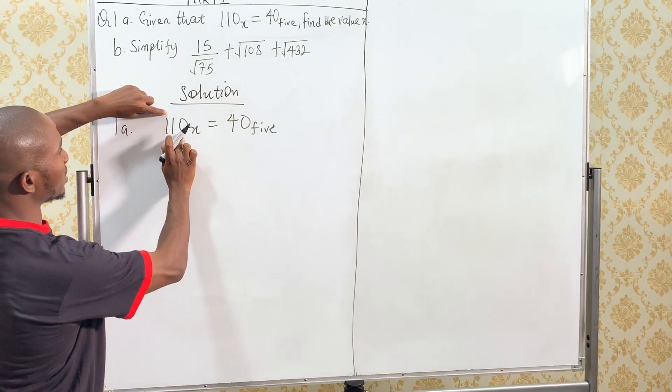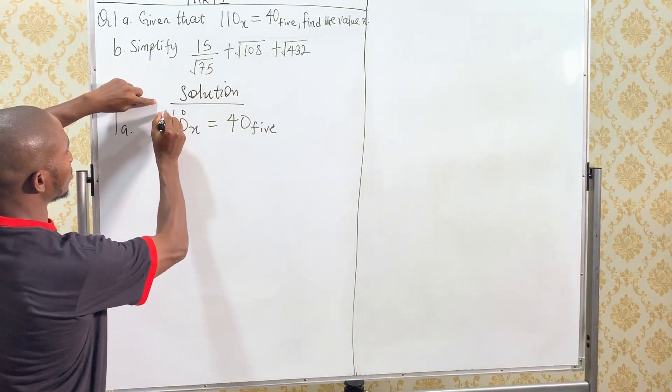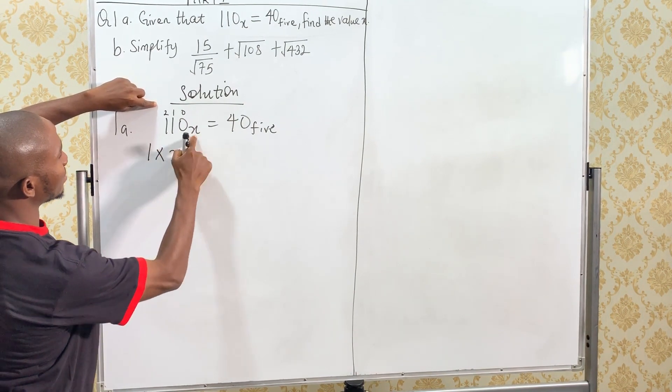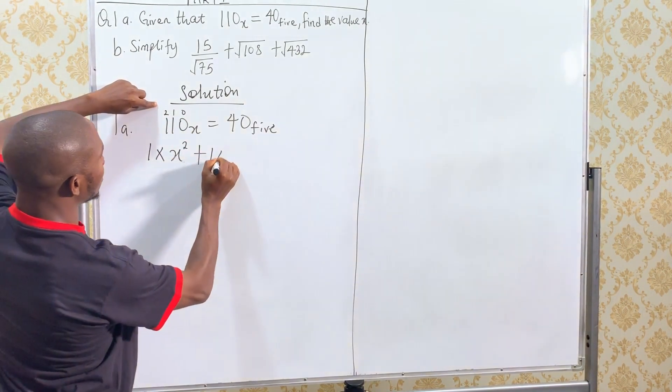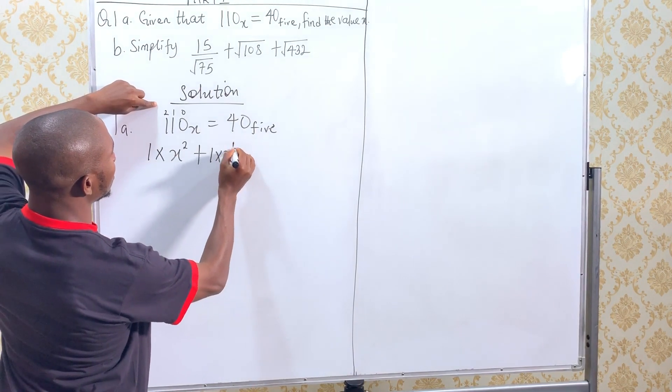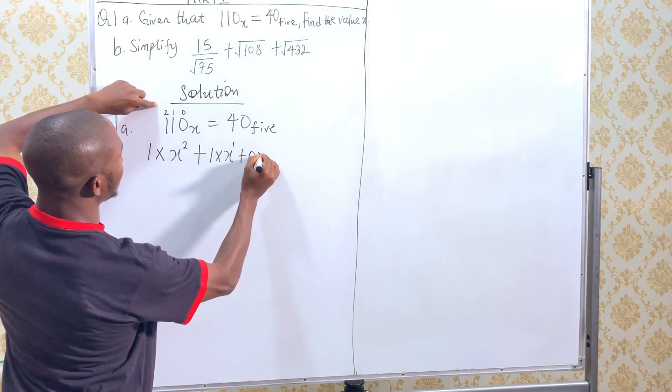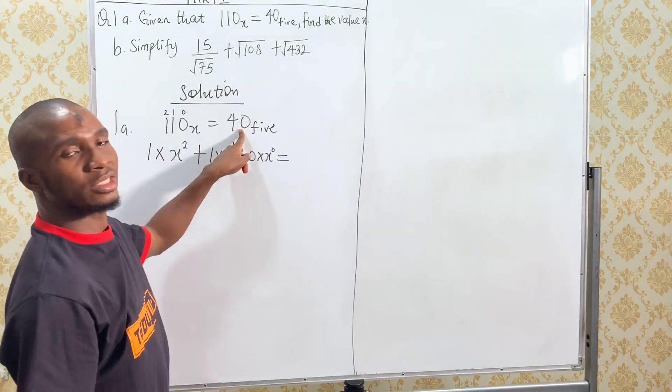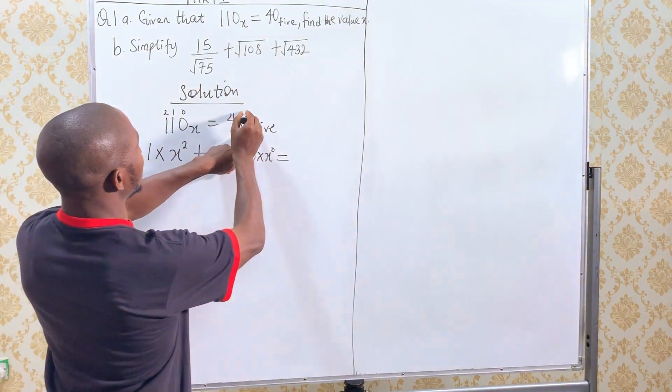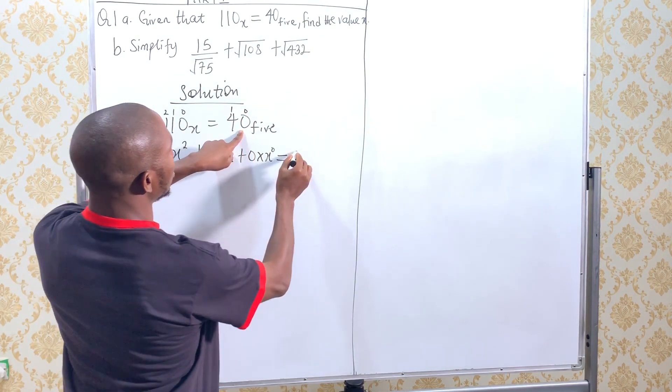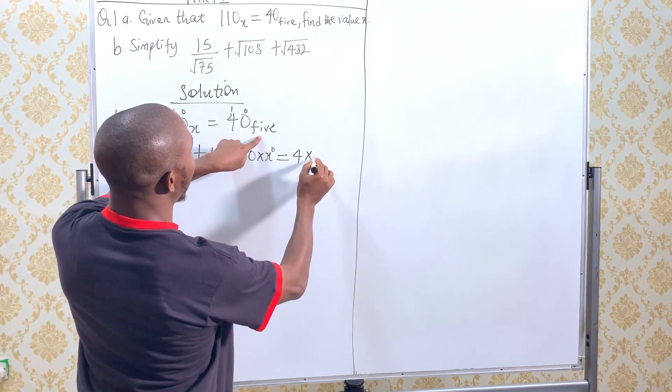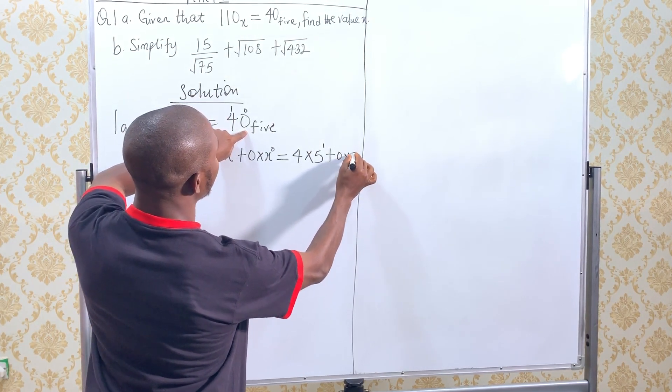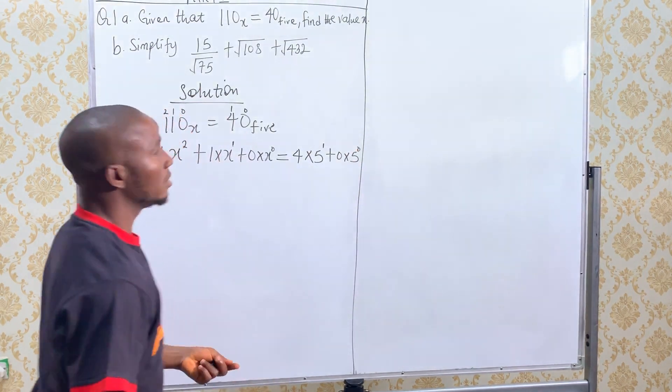Let's convert this to base 10. To base 10, it will become 1 times X raised to the power 2, plus 1 times X raised to the power 1, plus 0 times X raised to the power 0, which will be equals to 40, also to base 10. 4 times 5 raised to the power 1, plus 0 times 5 raised to the power 0. So, both the left and the right side are now in base 10.